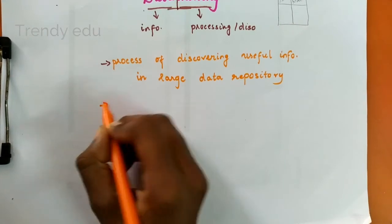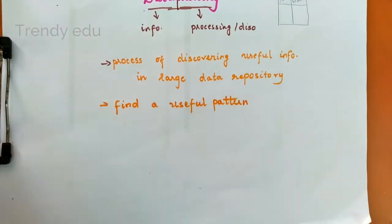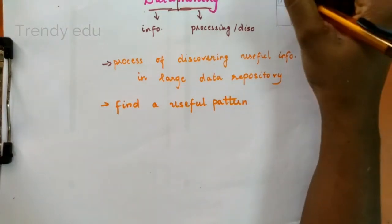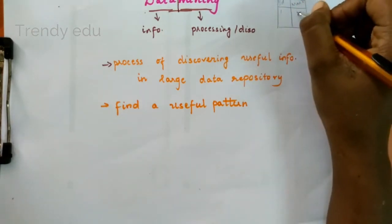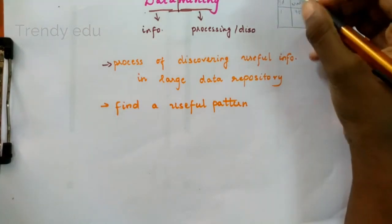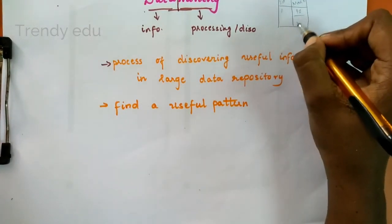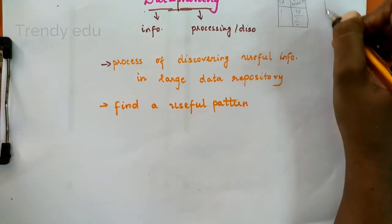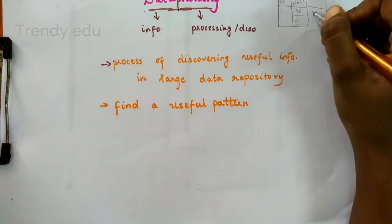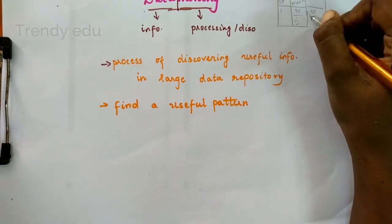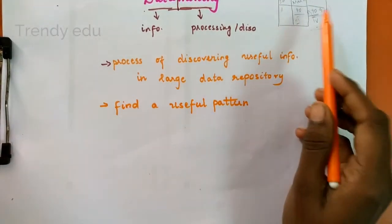The second point is to find a useful pattern. For example, let us assume a student of grade A with student ID number 1 secured a mark of 90 as the overall mark in the third semester. So we can assume that the student may secure around 90 percent in the fourth semester too. This is nothing but finding a useful pattern.